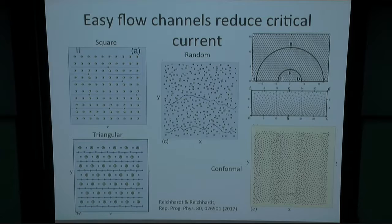One of the motivations for this work is the problem that people face when you start trying to introduce artificial pinning, which is that we know that if you put in a triangular or square lattice, you can get very strong pinning at the matching field. But as soon as you're even slightly away from the matching field — you have one extra vortex or one missing vortex — you can get easy flow along the channels of the lattice, and that will dramatically suppress the critical current. So what you'd like is a way to get rid of these easy flow channels that exist in these regular arrangements.